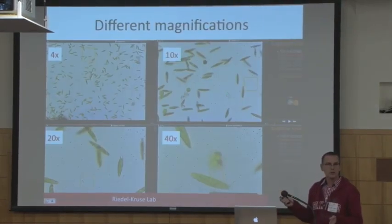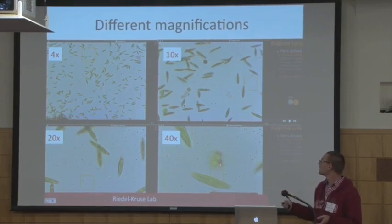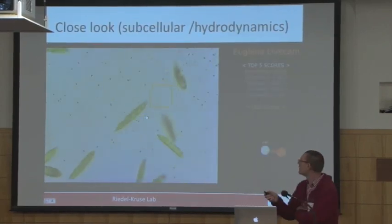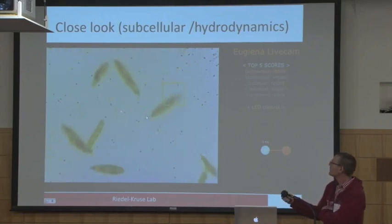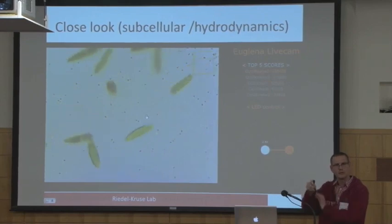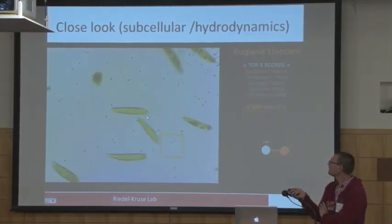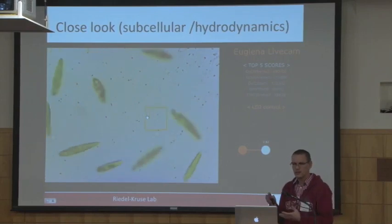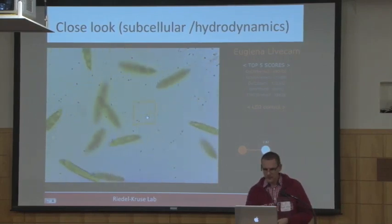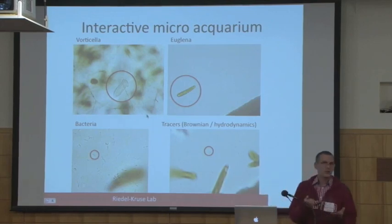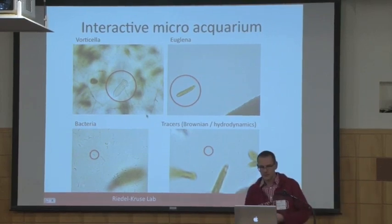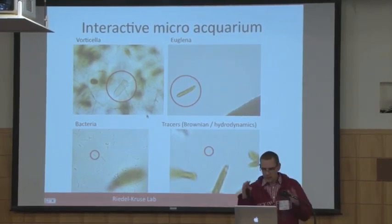Using different zoom levels in the microscope, you can look at very different features. At high magnification you can really look at subcellular detail. The dirt particles in the chamber show you the whole flow field of the surrounding medium, and you can even detect Brownian motion. There are lots of details students could study and discover while interacting with this interface. It's also a little micro-ecosystem — there are other organisms you can discover, for example vorticella, and if you zoom in you can see bacteria and tracer particles. A very rich experience.